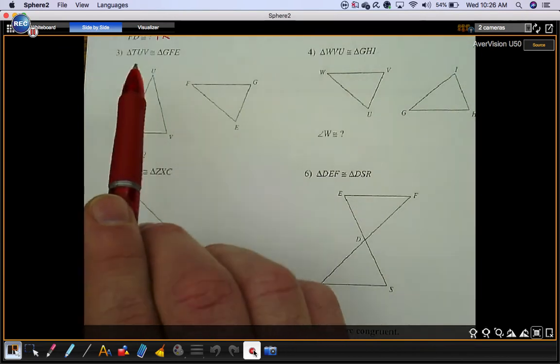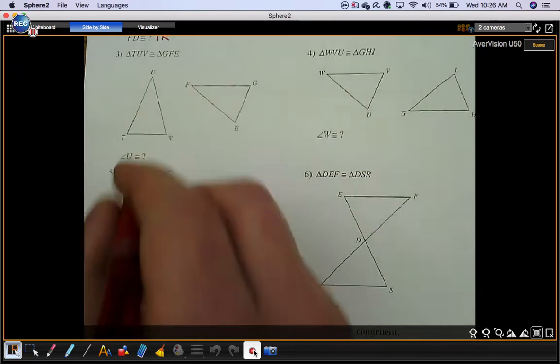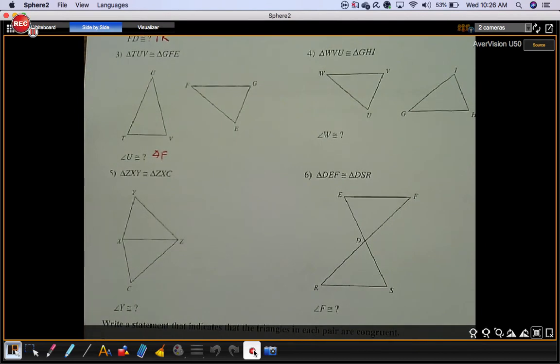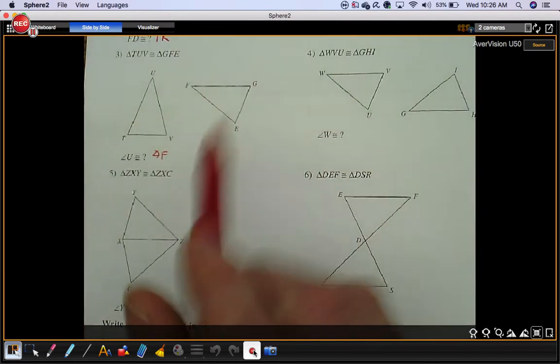For example, what does angle U go with? It goes with angle F. So angle U is congruent to angle F. That's how you do these problems.